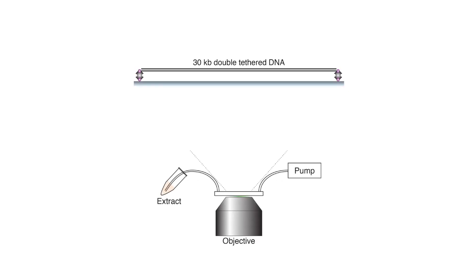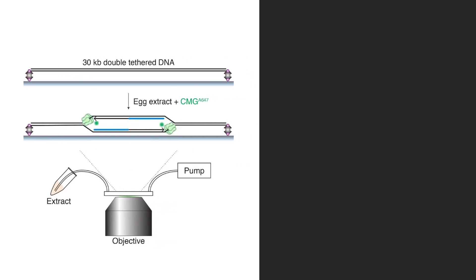Kyle took a long linear piece of double-stranded DNA and immobilized it in a stretched conformation in a microfluidic flow cell. He then pumped in the frog egg extract together with fluorescently labeled CMG helicase and used total internal reflection microscopy to look directly at the helicase as it's undergoing replication.